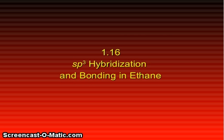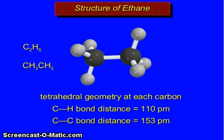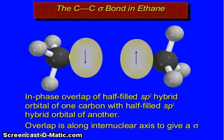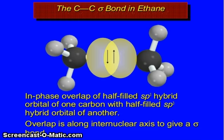sp³ hybridization and bonding in ethane. The structure of ethane has tetrahedral geometry at each carbon, C-H bond distance 110 pm, and C-C bond distance 153 pm. The C-C bond in ethane: in-phase overlap of a half-filled sp³ hybrid orbital of one carbon with a half-filled sp³ hybrid orbital of another, with overlap along the internuclear axis to give a sigma bond.